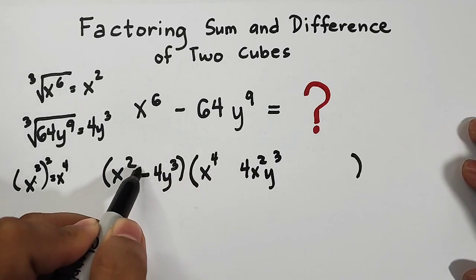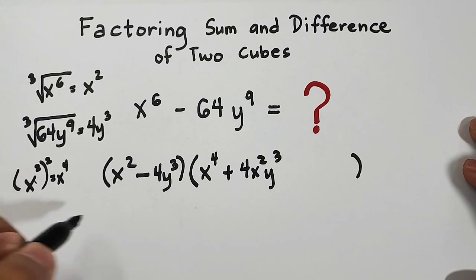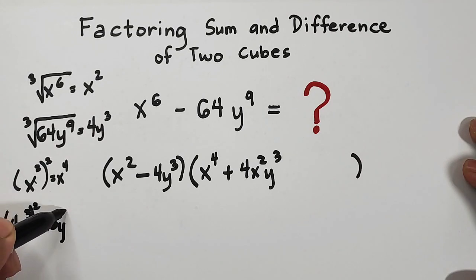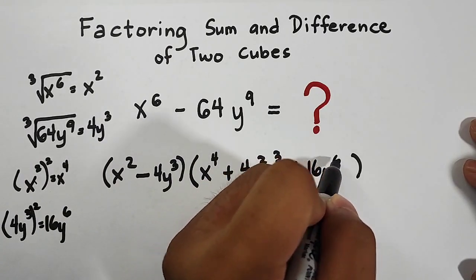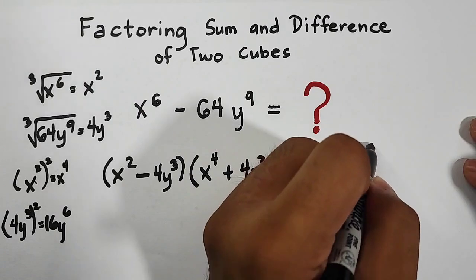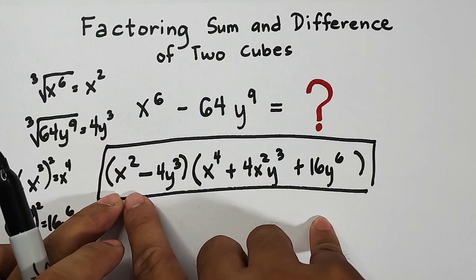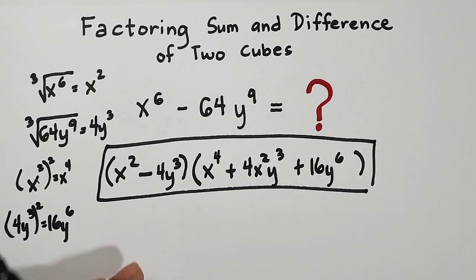To get the second term of the trinomial, multiply x squared times 4y cubed to get 4x squared y cubed — and since this one is subtraction, it becomes addition, giving plus 4x squared y cubed. Lastly, square the second term: 4y cubed squared is 16y raised to 6, so plus 16y raised to 6. The complete factored form is (x² − 4y³)(x⁴ + 4x²y³ + 16y⁶).